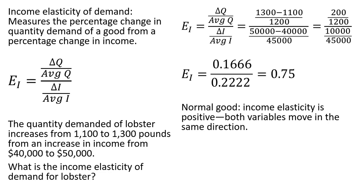This is a normal good. The income elasticity is positive for a normal good. Both variables are moving in the same direction. So income goes up, people buy more. That is a normal good.